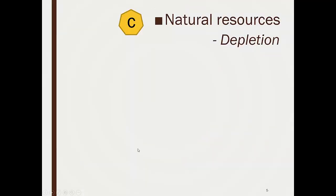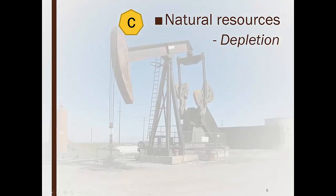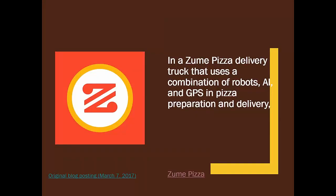The third kind of asset is a natural resource. These get what we call depleted. If we're in a coal mine, there's only a certain amount of coal in that mine, and as we take it out, we're depleting or reducing the amount remaining. So we deplete a natural resource.